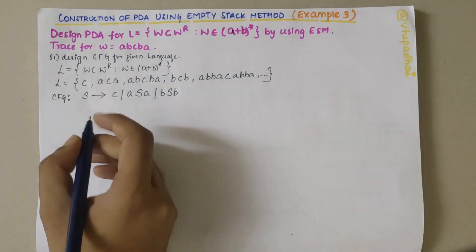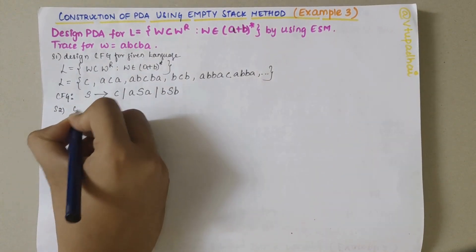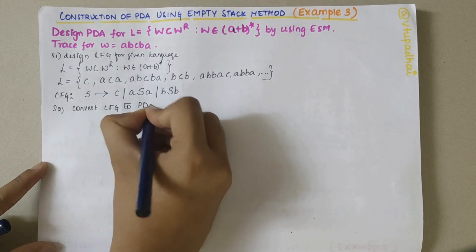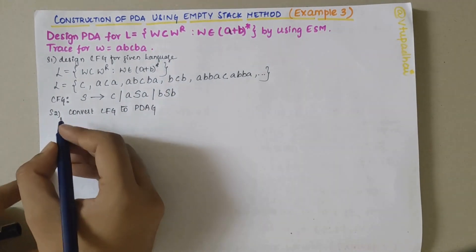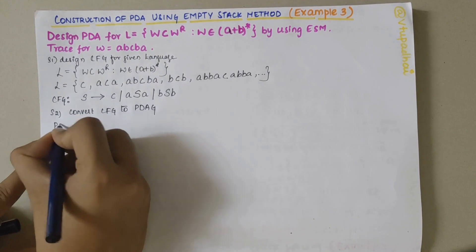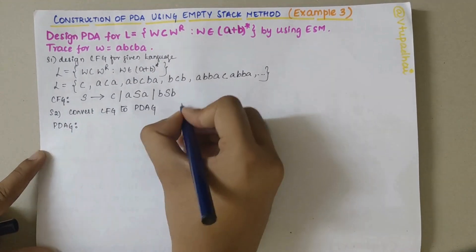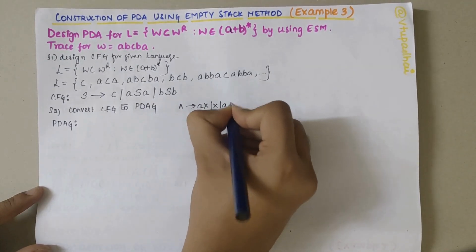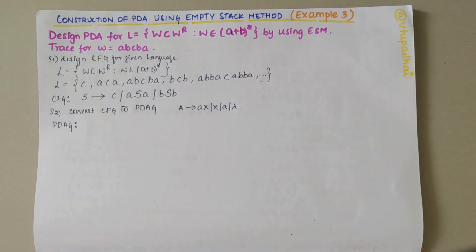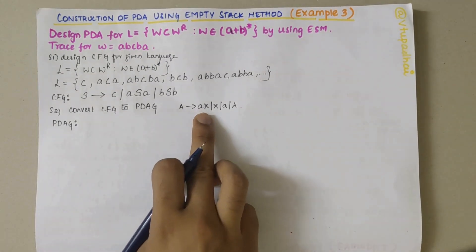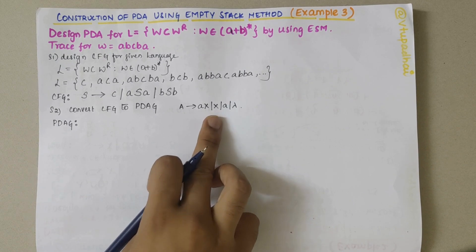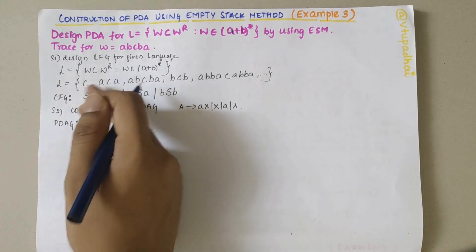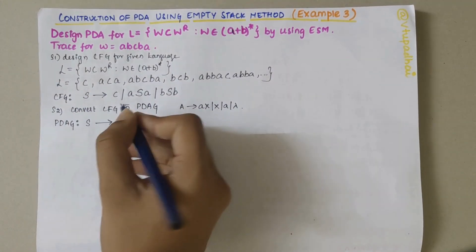My next step is to convert from CFG to PDAG form. The PDAG condition requires productions of the form: A → a X (terminal followed by any number of non-terminals), or just a non-terminal, or just a terminal, or lambda. I'll now convert this CFG to PDAG form, starting with S → C.